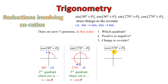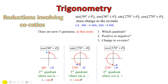Looking at another one: sin of 270 plus theta. There's our 270, we add theta and we're into quadrant 4. In quadrant 4, cos is positive. And the co-ratio of cos is sine. So it becomes a positive sine theta.